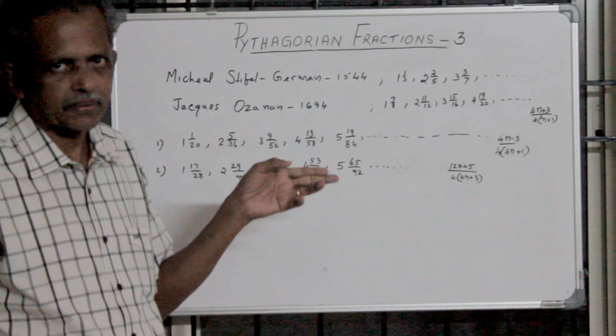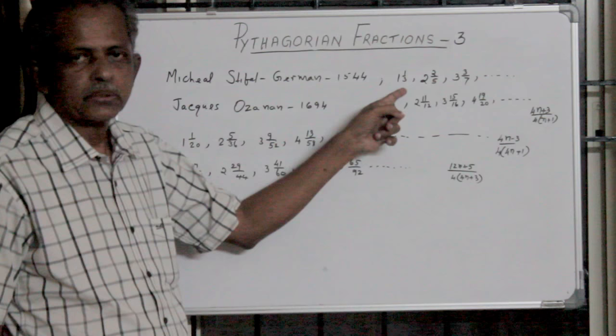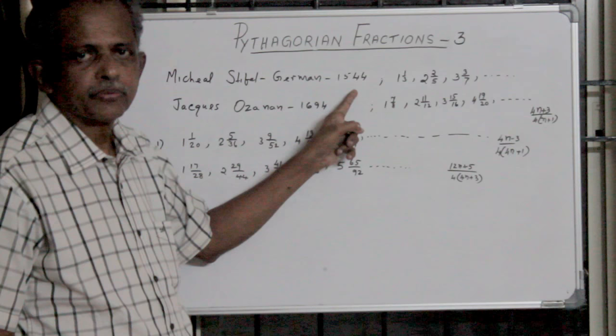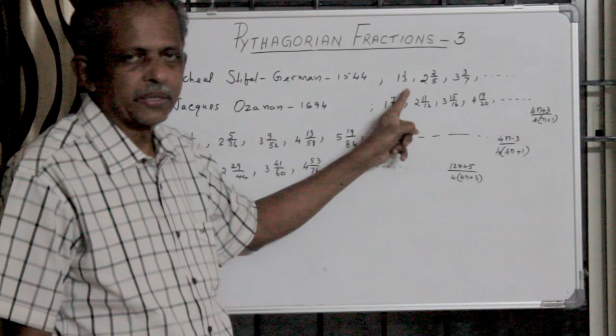The first series of these Pythagorean fractions was developed by Michael Stiefel in 1544. The sequence is 1 and 1 by 3, 2 and 2 by 1, 3 and 3 by 7, etc.